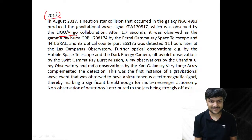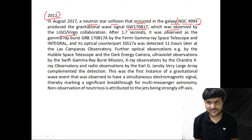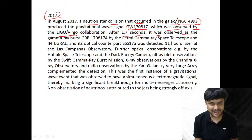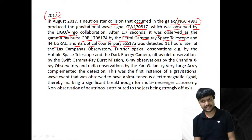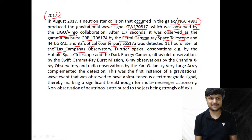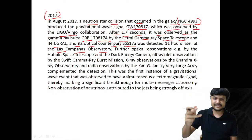In August 2017, a neutron star collision in galaxy NGC 4993 produced a gravitational wave signal designated GW170817, first observed by the LIGO-Virgo collaboration. After 1.7 seconds it was observed as a gamma-ray burst by the Fermi Gamma-ray Space Telescope and INTEGRAL. Its optical counterpart AT2017gfo was detected 11 hours later. This was the first gravitational wave event observed with a simultaneous electromagnetic signal, marking a breakthrough for multi-messenger astronomy.